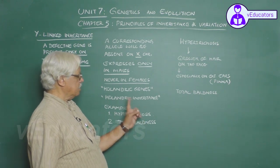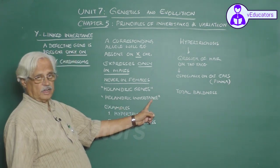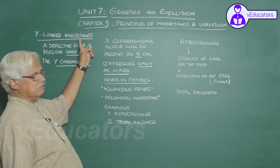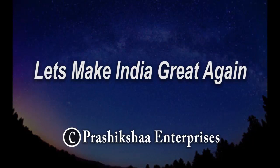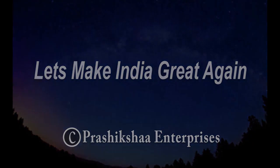So, this kind of inheritance is called holandric inheritance or y-linked inheritance.